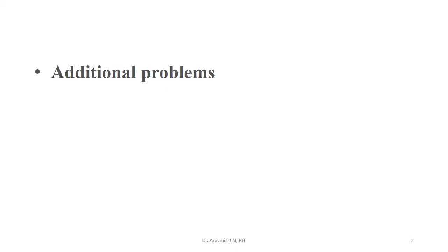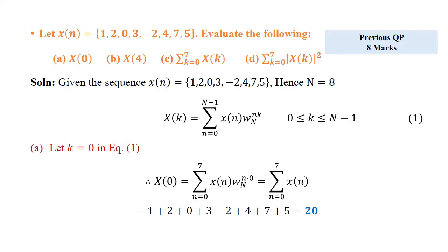Welcome. In this lecture we are going to solve a few problems related to the properties of the DFT. Let us start with the statement of the problem. Let x(n) = {1, 2, 0, 3, -2, 4, 7, 5}. Evaluate the following: (a) X(0), (b) X(4), (c) summation k=0 to 7 of X(k), (d) summation k=0 to 7 of |X(k)|². This question has been asked in a previous question paper for eight marks.